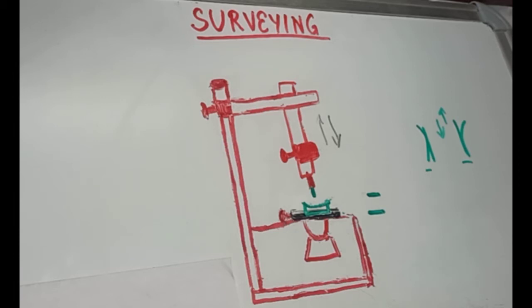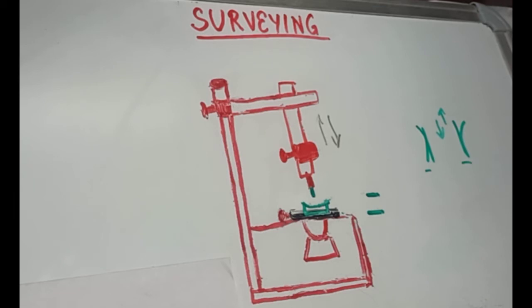Now, moving on. Then, we determine the parallelism of the abutment teeth. The path of insertion of the RPD should be parallel to the long axis of the abutment teeth for the easy insertion and removal of the denture.